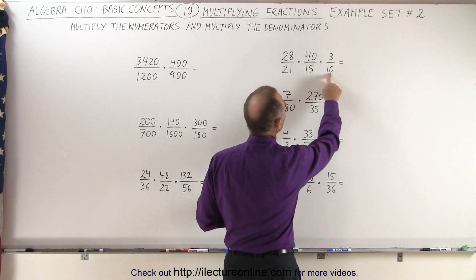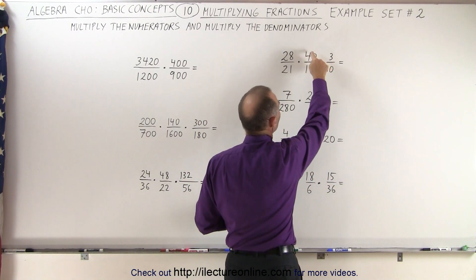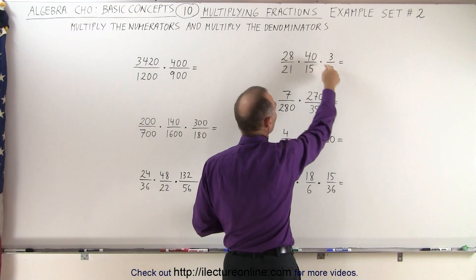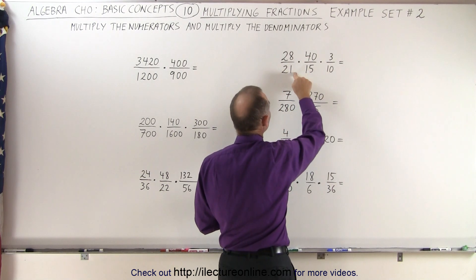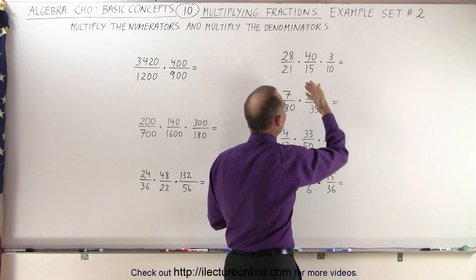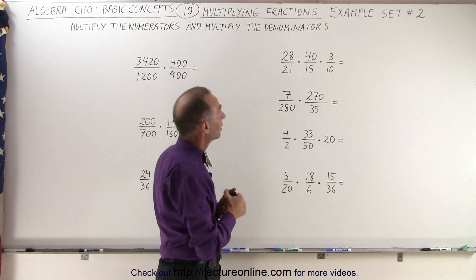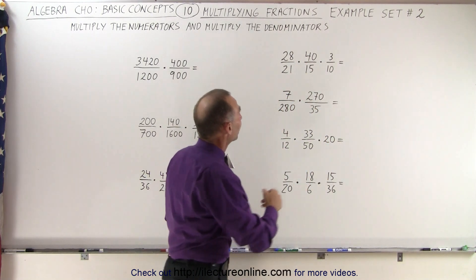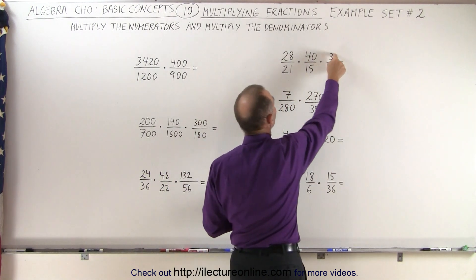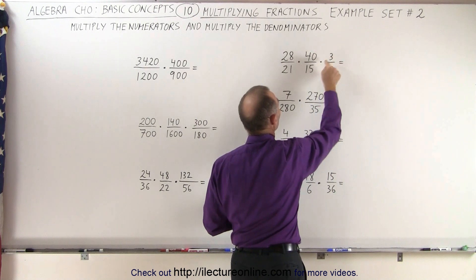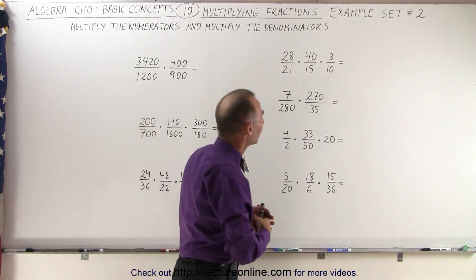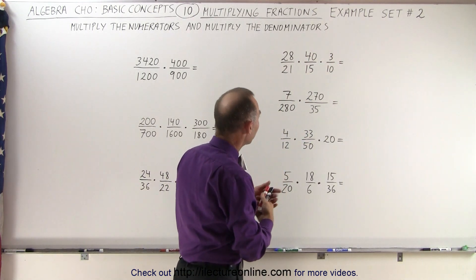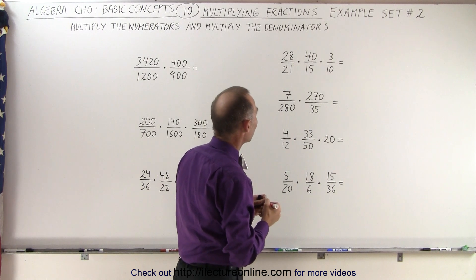I notice we have a 10 here and a 40 there. They both end in a 0, so we can divide those by 10. We have a 28 and a 21 — those are multiples of 7. And then we have a 3 here and a 15, so those are both divisible by 3. So let's start by simplifying those.